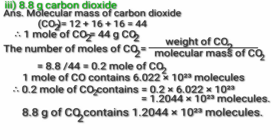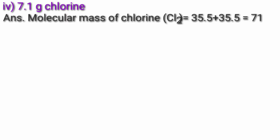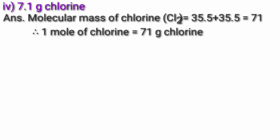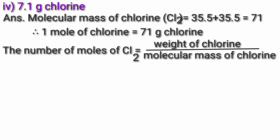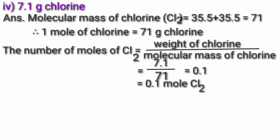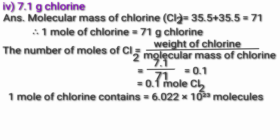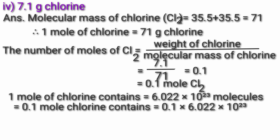8.8g CO₂ contains 1.2044×10²³ molecules. Fourth, 7.1g chlorine. Molecular mass of chlorine Cl₂ = 35.5 + 35.5 = 71. Therefore 1 mol of chlorine = 71g chlorine. Number of moles of chlorine = 7.1 ÷ 71 = 0.1 mol. 1 mol of chlorine contains 6.022×10²³ molecules. Therefore 0.1 mol of chlorine contains 0.1 × 6.022×10²³ = 6.022×10²² molecules.